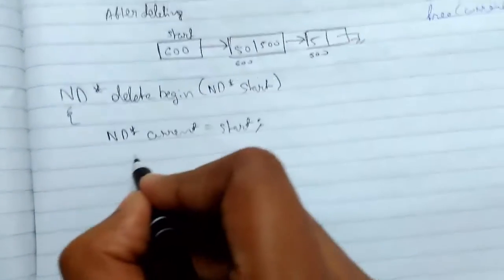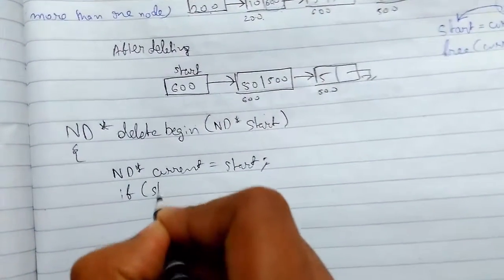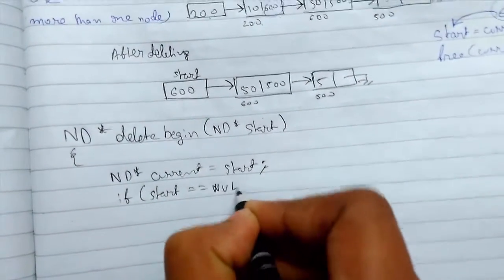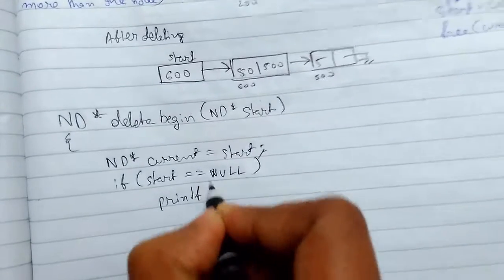So now for our first case when start was null, if start equals to equals to null, then we can printf deletion is not possible.